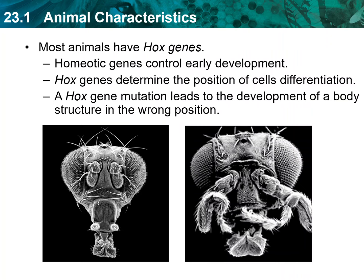Most animals that scientists have studied so far share a group of genes called homeotic genes. Homeotic genes are a class of genes that control early development. In animals, an important group of homeotic genes called hox genes are defined by a sequence of 180 nucleotides called homeobox genes. Hox genes define the head-to-tail pattern of development in animal embryos. Homeotic genes create segments in a larva or embryo that develop into specific organs and tissues. The hox genes within these segments determine the position of cell differentiation and development by switching certain genes on or off.